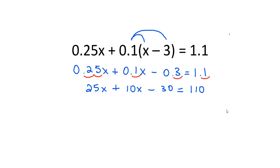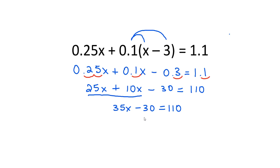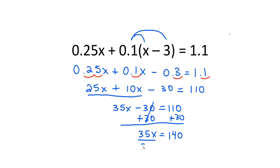Now all of the decimals are gone and we have a regular linear equation. The next thing we need to do is combine like terms that are on the same side of the equation. 25x plus 10x would be 35x minus 30 equals 110. Now I want to isolate the variable, so I'm going to add 30 to both sides of the equation. That leaves me with 35x equals 140. Then the last step is to divide both sides by 35, and that gives me x equals 4.